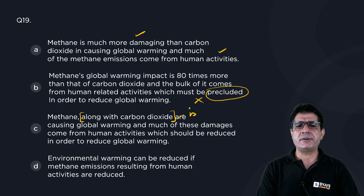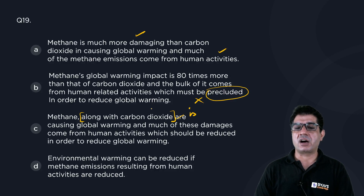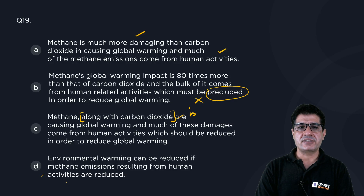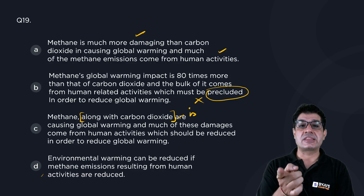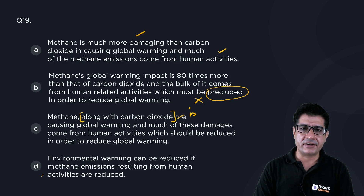Let's look at D. Environmental warming can be reduced if methane emissions resulting from human activities are reduced. Option D contains two ideas but misses the one idea that methane is more damaging than carbon dioxide.